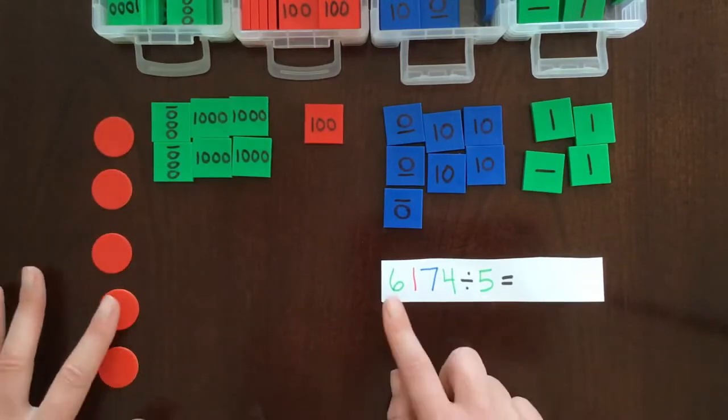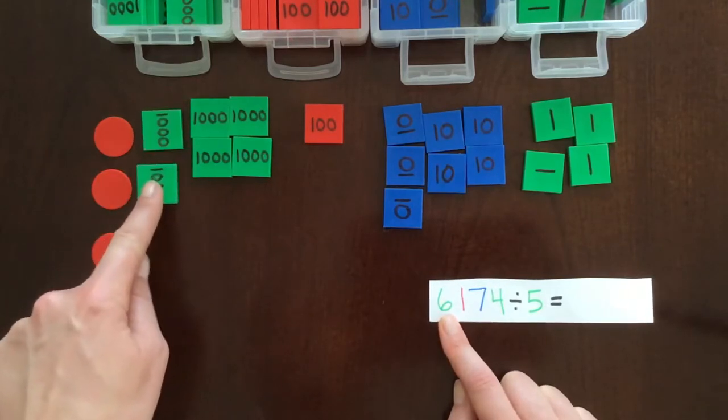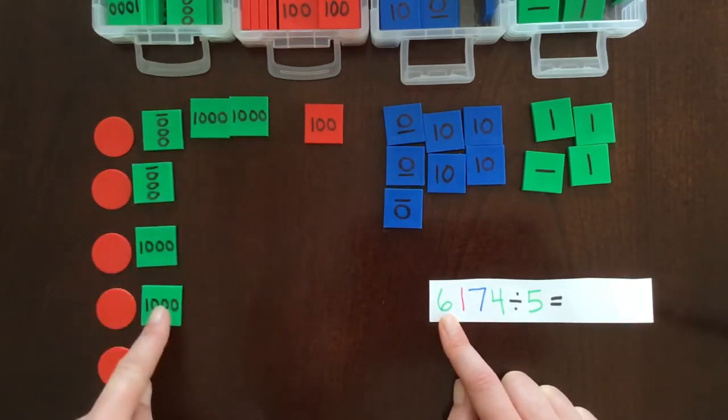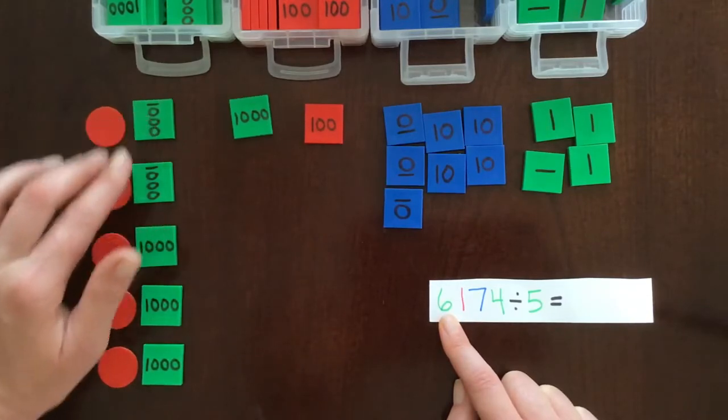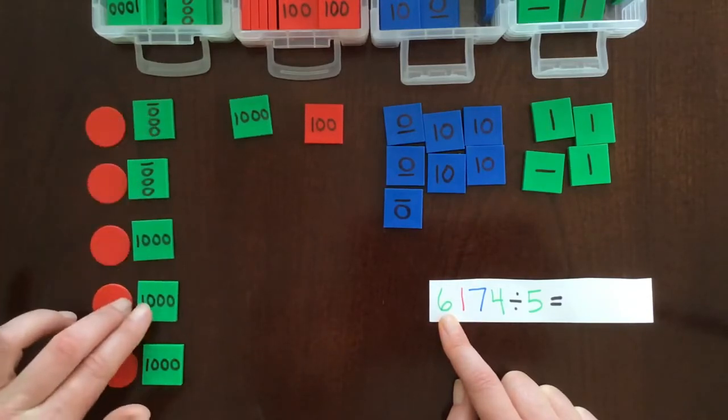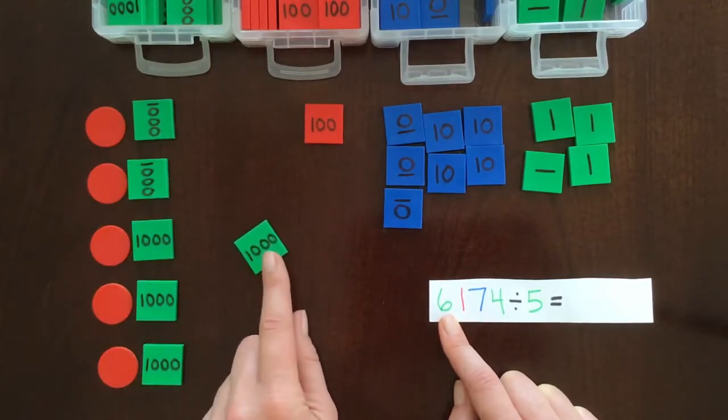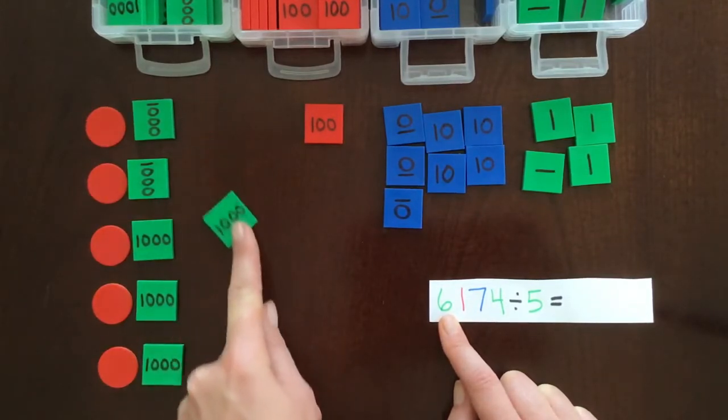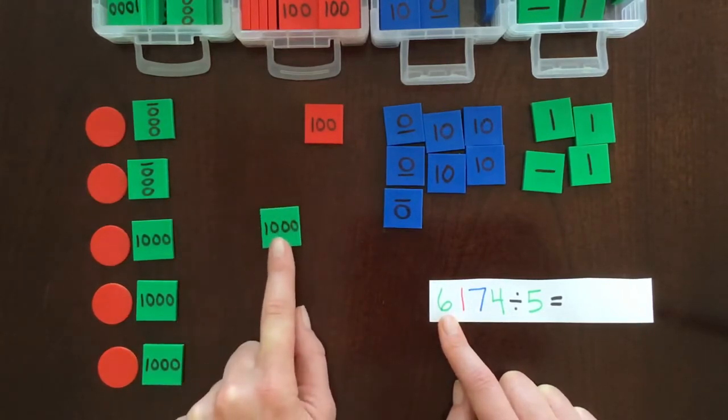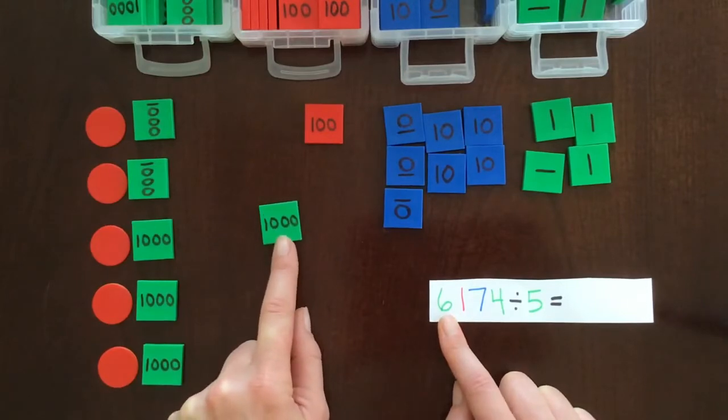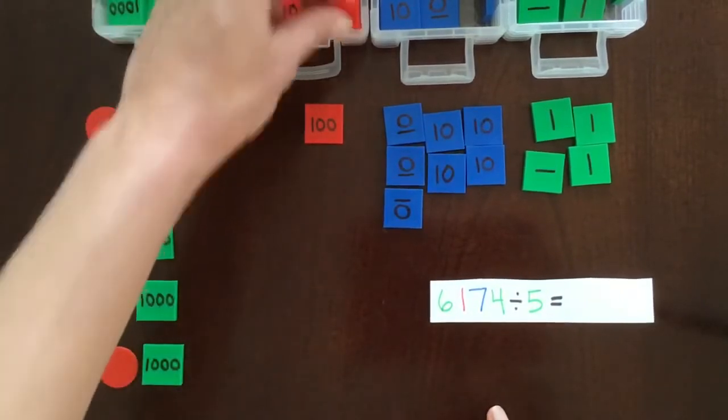So we are going to start as always with our biggest number. Each one of these little guys gets a thousand. And I can see there's 1,000 left over. I can't just give it to one. So because I don't have enough for each, I need to exchange that 1,000 for 10 hundreds.